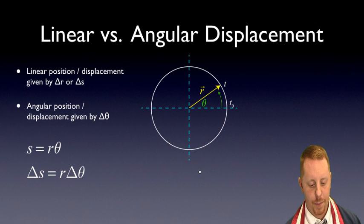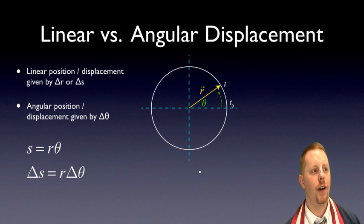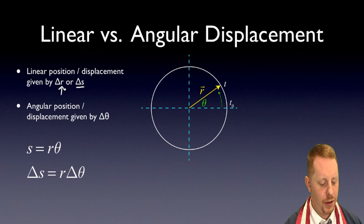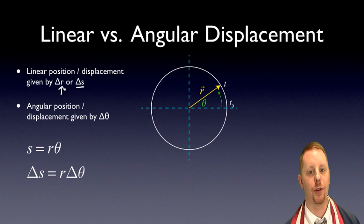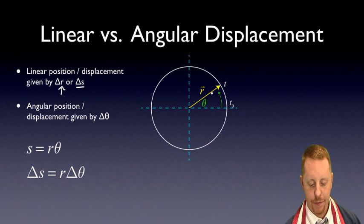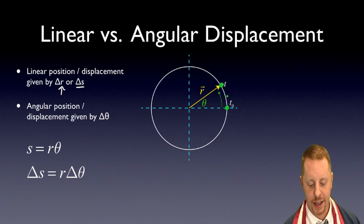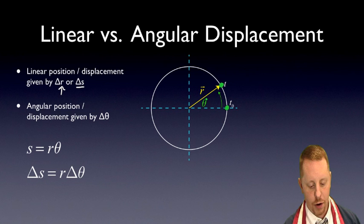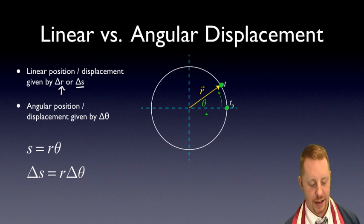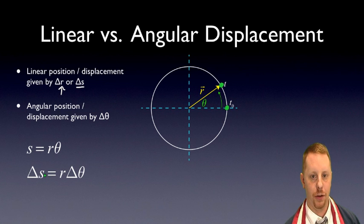Let's talk about displacements — linear compared to angular. The linear position or displacement is given by ΔR or ΔS. When talking about rotating objects, it's usually more helpful to use ΔS so we don't confuse displacement with the radius of the circle. Angular position or displacement is given by Δθ. Looking at our diagram, an object at time t₀ moves around the circle to a final time t. Its translational displacement S equals R, the radius, times the angle θ it has moved through: ΔS = R·Δθ.